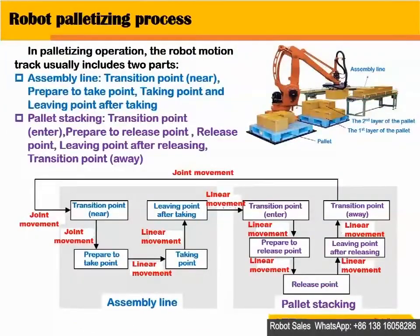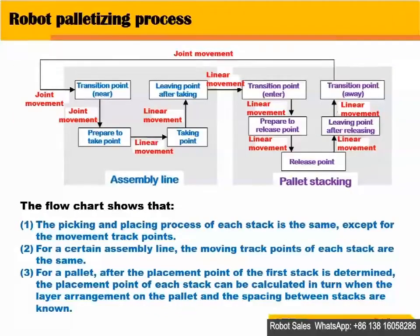In palletizing operation, manually teaching the robot motion track usually includes two parts: one is the assembling line, another is pallet stacking. The flowchart shows that the picking and placing process of each stack is the same, except for the movement track points.